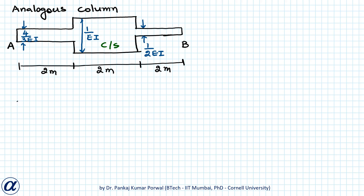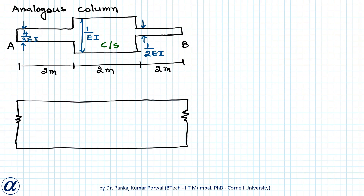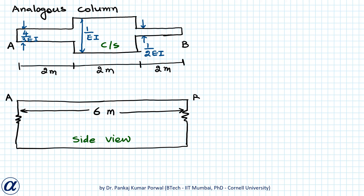The side view will look like this. The total width is 6 meters. Point A is at one end and point B is at the other end. The height of this analogous column is a short height.